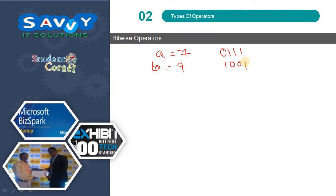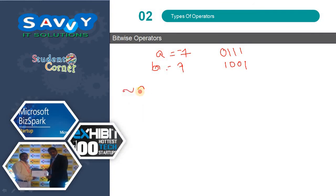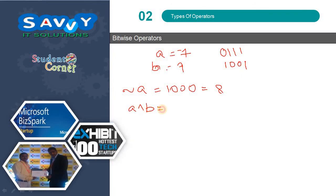Let a equal 7, whose binary form is 0111, and b equal 9. Performing tilde of A (bitwise NOT) reverses all the bits, giving an output of 8. For A XOR B (A ^ B): opposite bit signs become 1 and same signs become 0. Performing XOR on the bits 0111 and the binary of 9 gives the result 13.